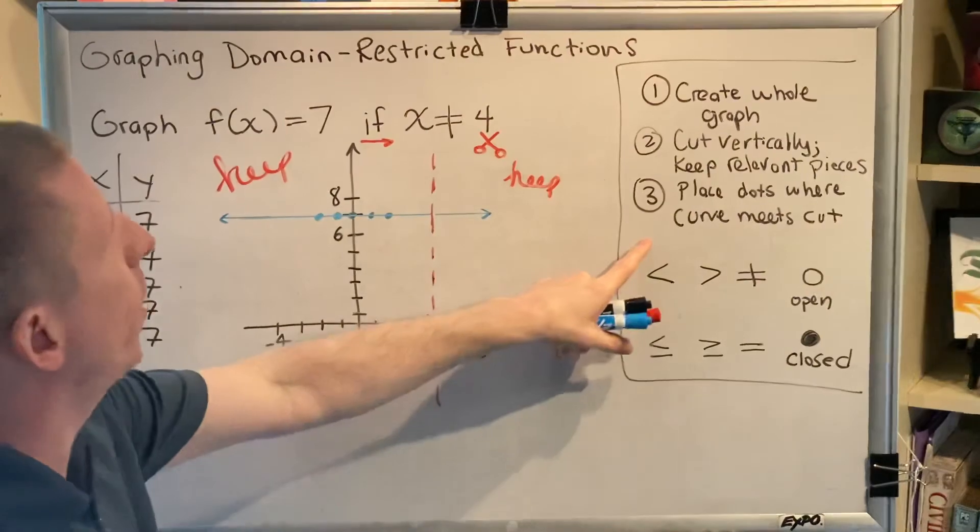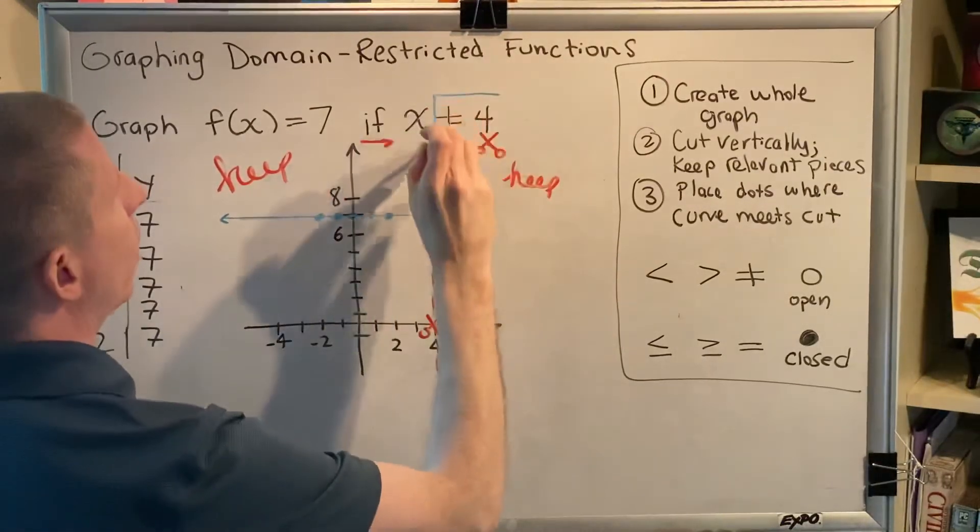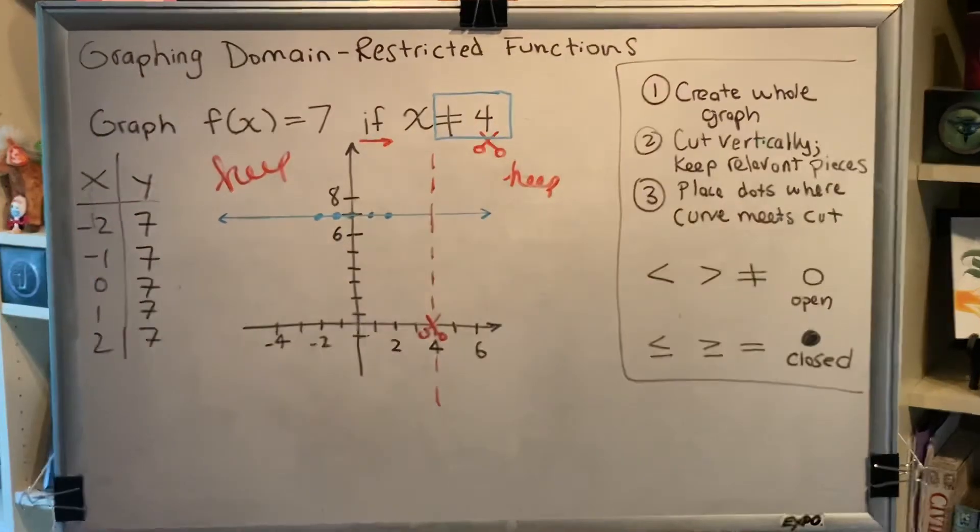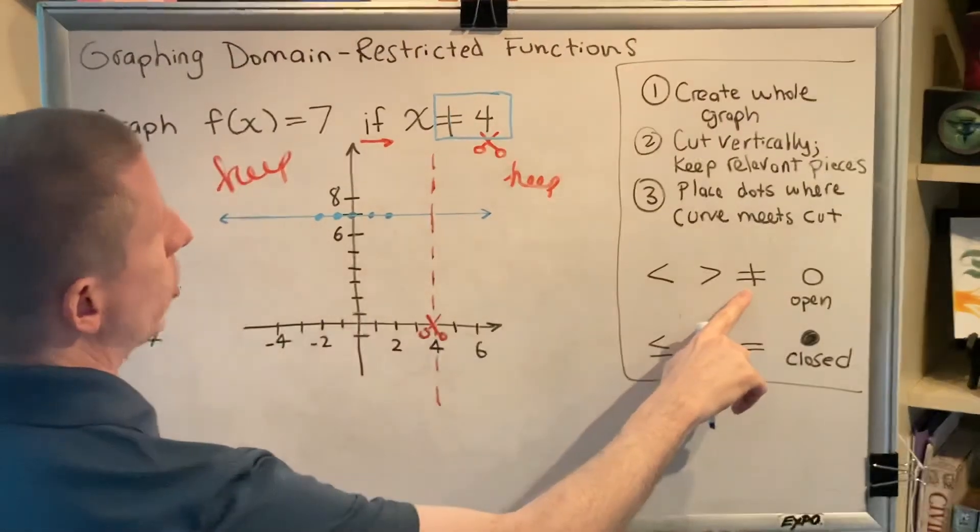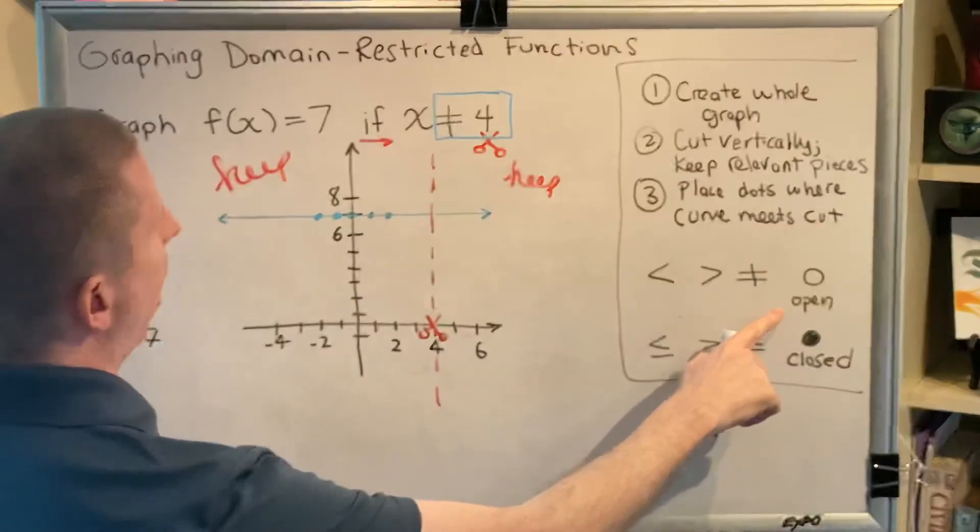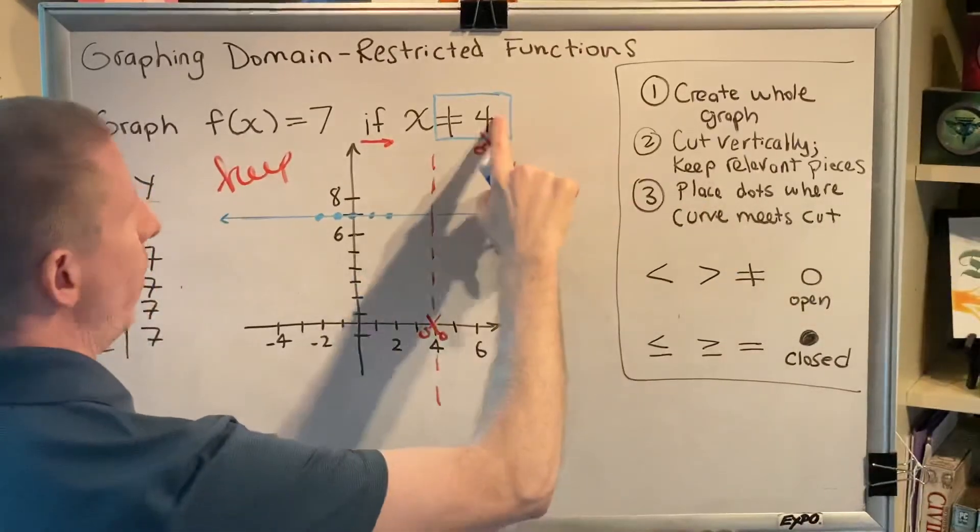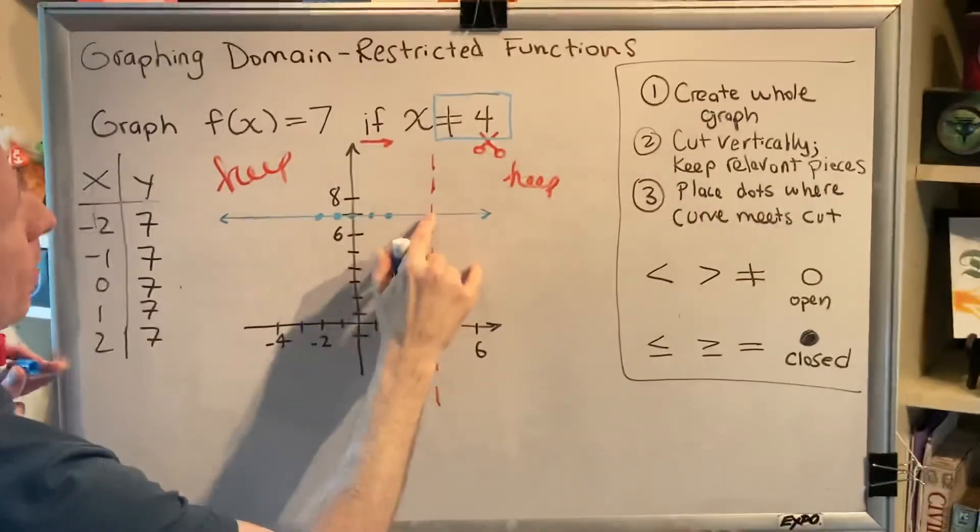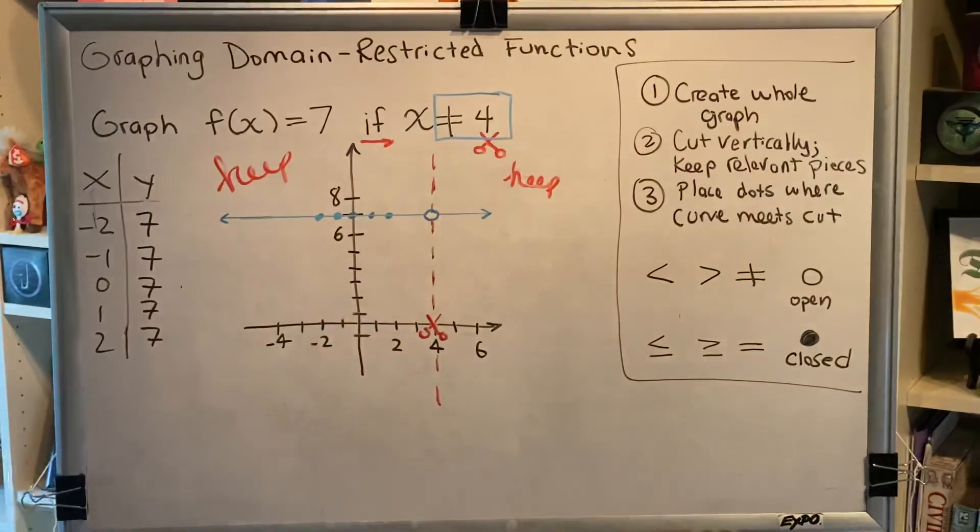That brings us to step 3. Place dots where the curve meets the cut. So the number in our if statement is 4, and it's next to the symbol inequality. Not equal to shows up here. So I'm going to use an open dot where the curve meets the cut. An open dot at 4 where the blue curve meets the red cut. That means right here is where my open dot goes.